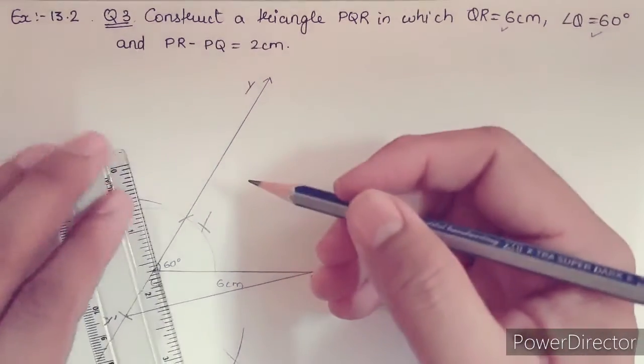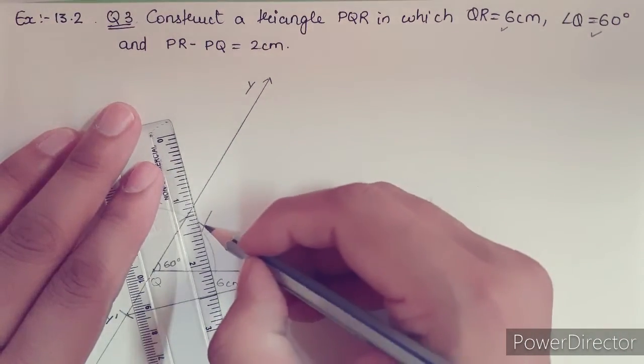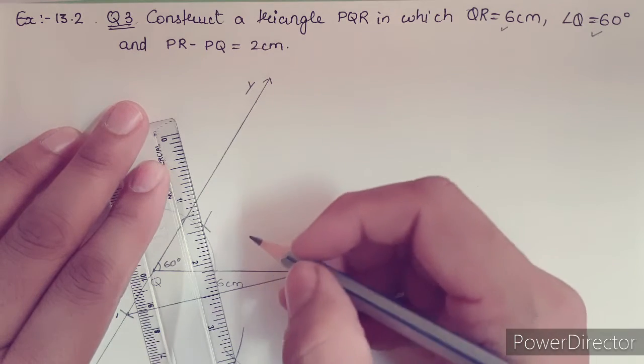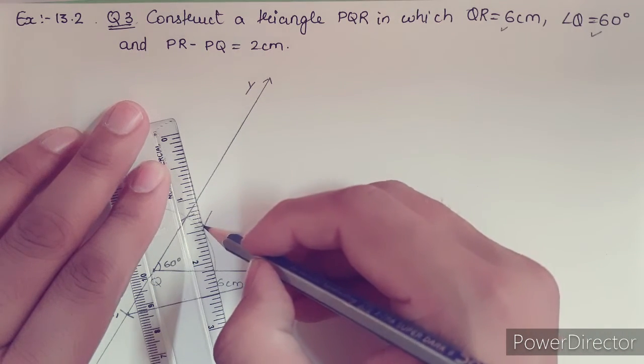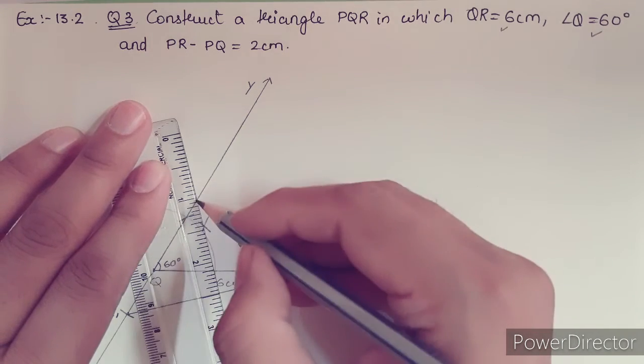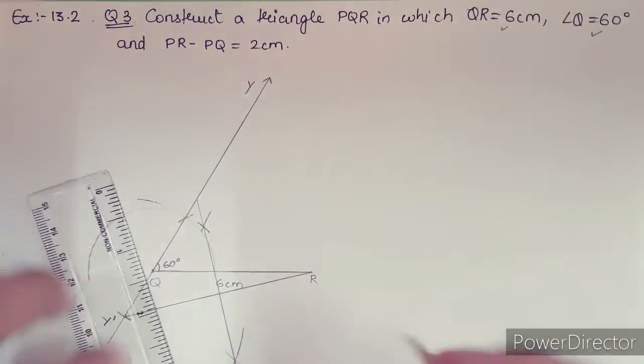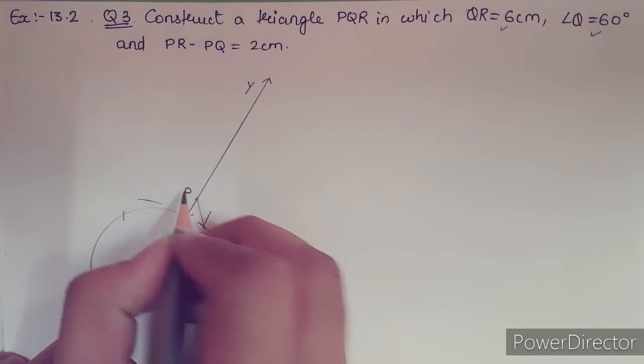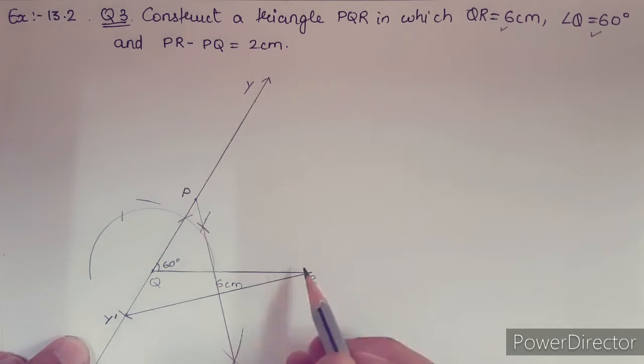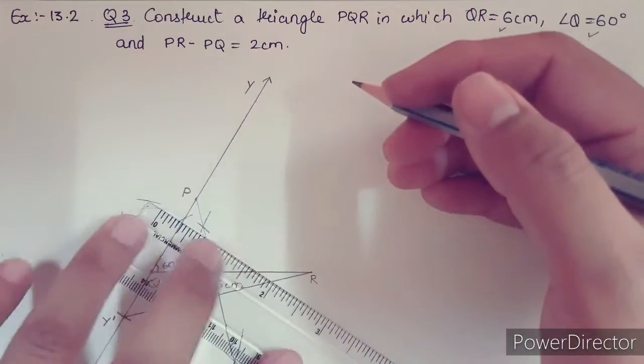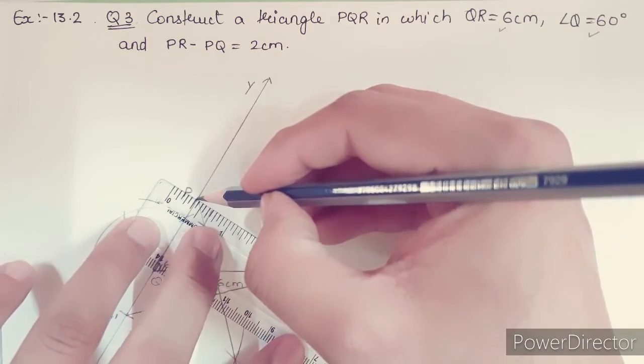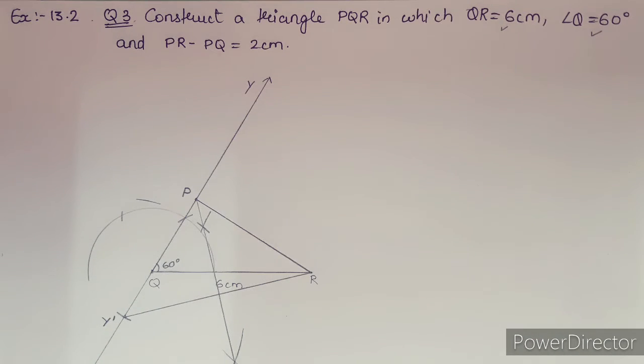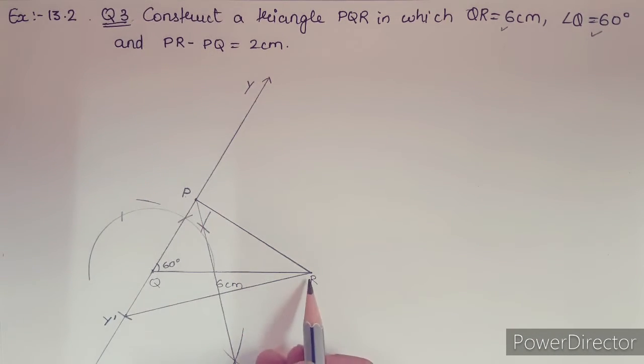Now I simply connect this. This point is your P. So we have P, we have Q, and we have R. We just simply need to connect PR, and then at the end we are going to verify whether we are going to get 2 cm or not. Let's connect it. This is P, Q, and R.